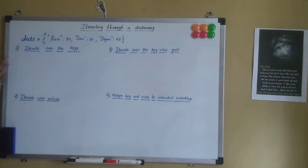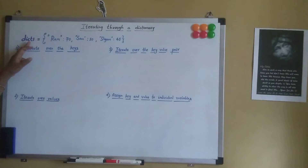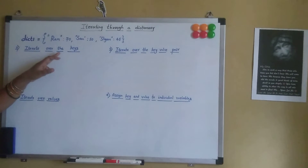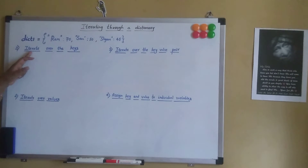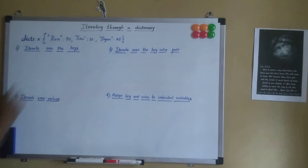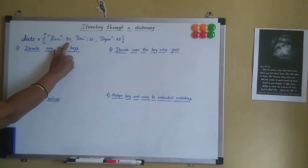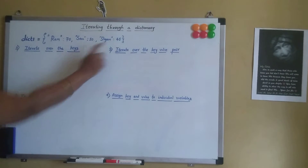Let's cover four different types of iteration through a dictionary. The first one is iterate over the keys — when we iterate the dictionary and want only the keys, we get ram, sam, and sham. The second method is iterating over values — when we iterate over values, we get 70, 50, and 45.